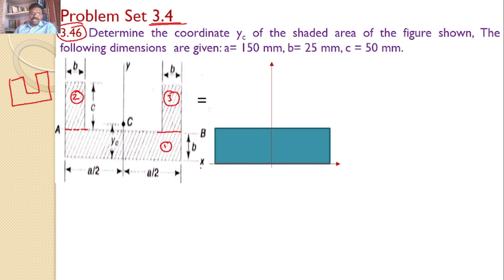What are the dimensions for area 1? The bottommost one is a and the height is b. The value of a is given as 150, so a by 2 is 75 and 75. The height is equal to b, that is 25.